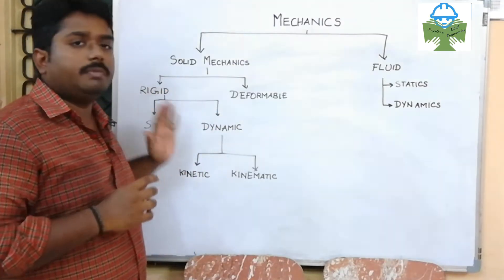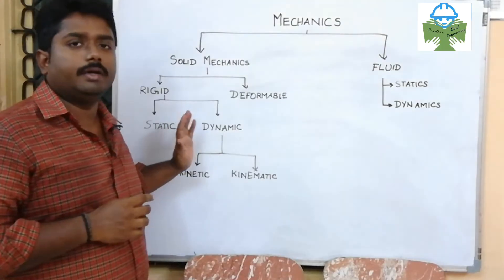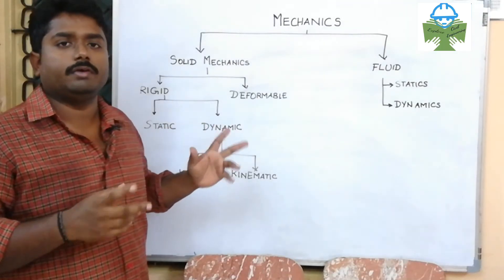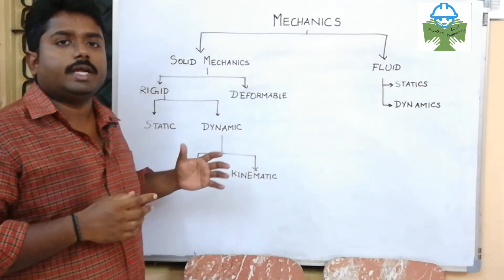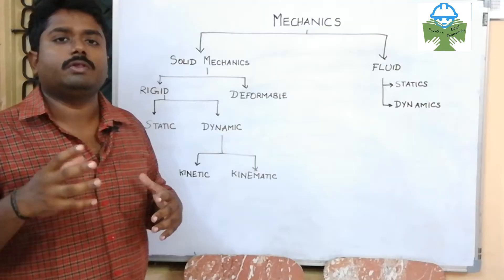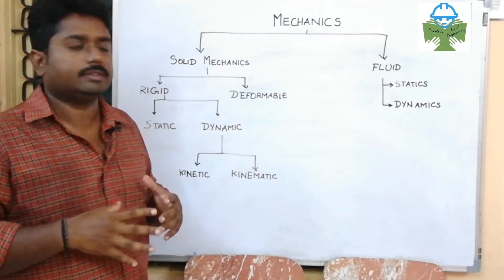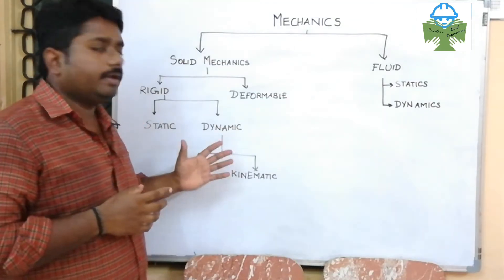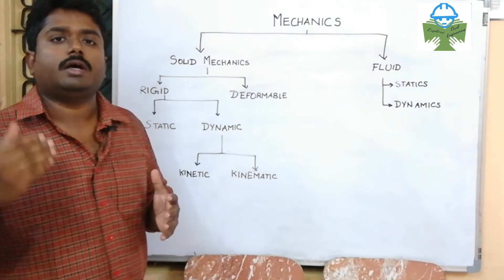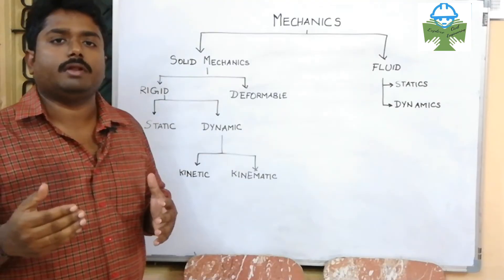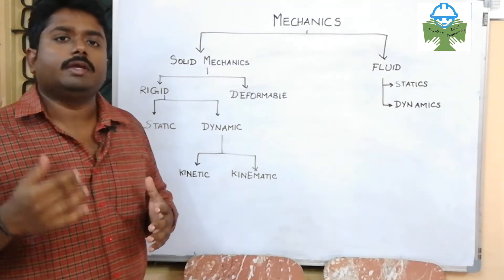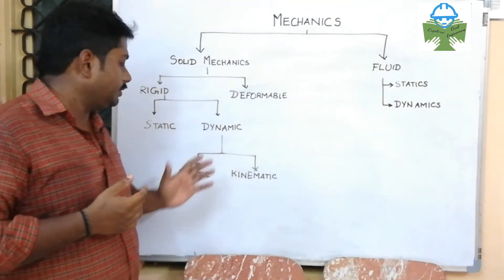Rigid body mechanics covers statics and dynamics. A static object is at rest or in equilibrium. A dynamic object is in motion, and when a force is applied, it is dynamics.